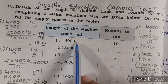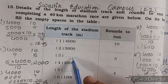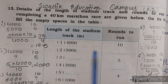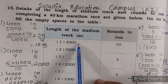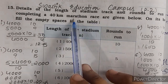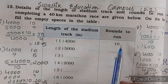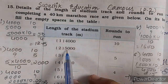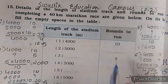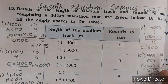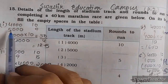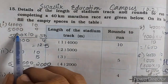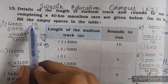For example, 4000 meter mein jo bhi distance hai, woh meter mein di gayi hai, aur yahan pe rounds di gayi hain. 4000 meter ko complete karne mein kitne rounds maarne padenge? 10 rounds. To 5000 meter ke liye kitne rounds maarne padenge?